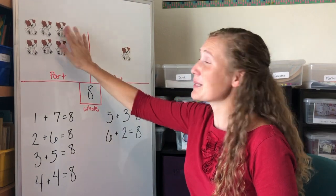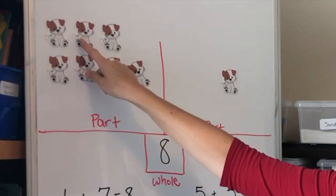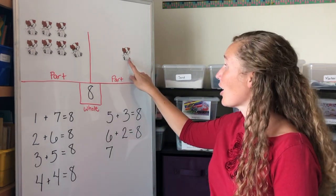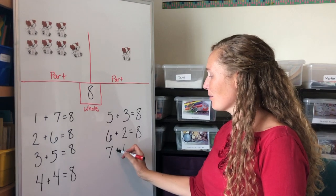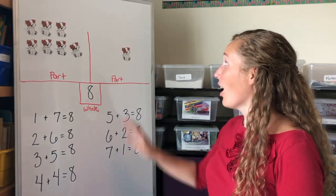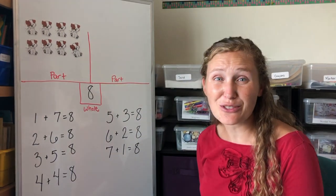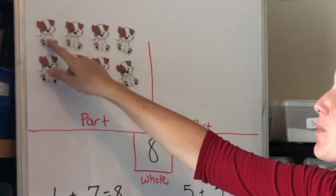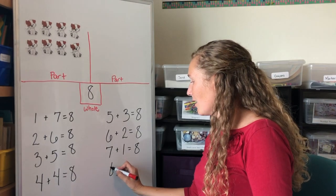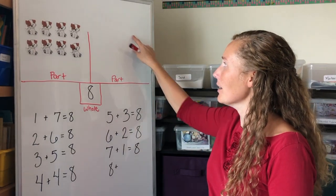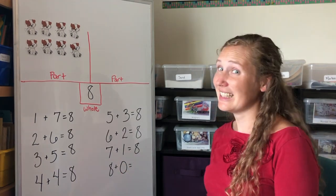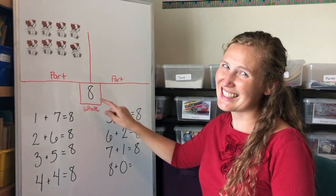Another one's moving over. This part has one, two, three, four, five, six, seven. And this part has one. Seven plus one equals eight — that's our whole. What if this dog comes and joins his friends? Now this part of our board has one, two, three, four, five, six, seven, eight dogs. Plus how many do we have in this part? None, zero. Eight plus zero equals our whole group of dogs, which is eight.